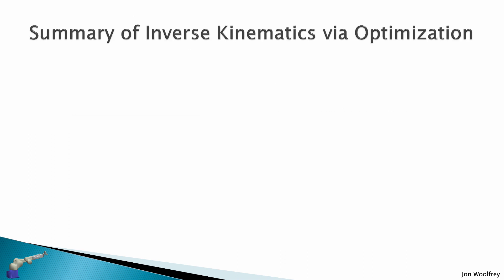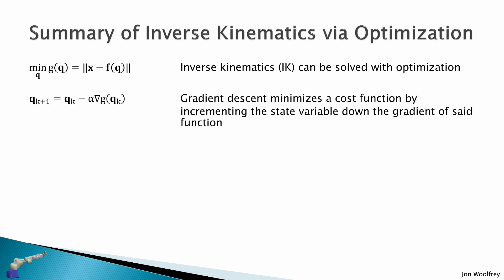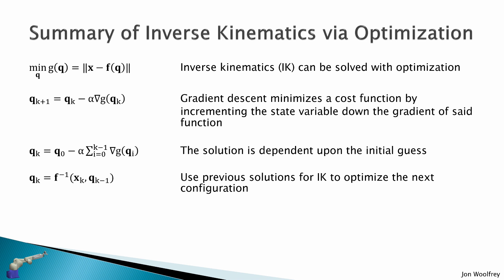To summarize inverse kinematics via optimization: Inverse kinematics can be solved with optimization, where we want to minimize some scalar cost function which describes the end effector pose. Gradient descent minimizes a cost function by incrementing the state variable down the gradient of this function. The solution is dependent upon the initial guess q0. We use previous solutions for inverse kinematics to optimize the next joint configuration. And inverse kinematics via gradient descent optimization increments the joint state to reduce pose error.